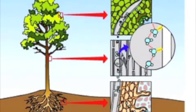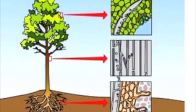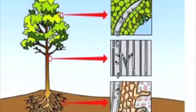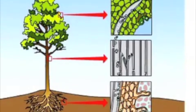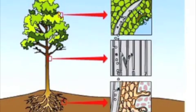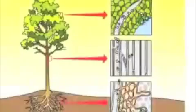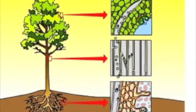Long-distance water transport is called the cohesion theory, where the force of transport is transpiration — the evaporation from the leaf surfaces. It involves the sticking of water molecules so they form a continuous flow extending from the leaves to the roots. Adhesion is where water molecules stick to the walls of the xylem. When there is unequal distribution of ions across the cell membrane, solutes move along a concentration gradient, which is also called diffusion.